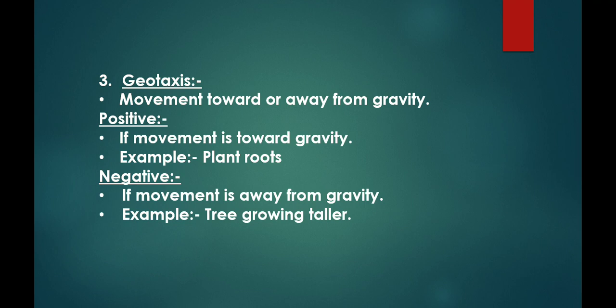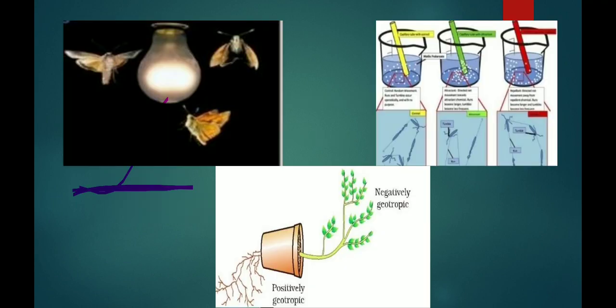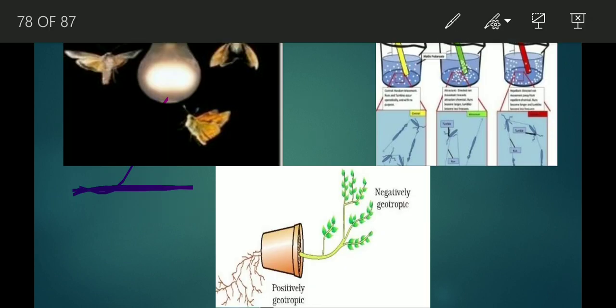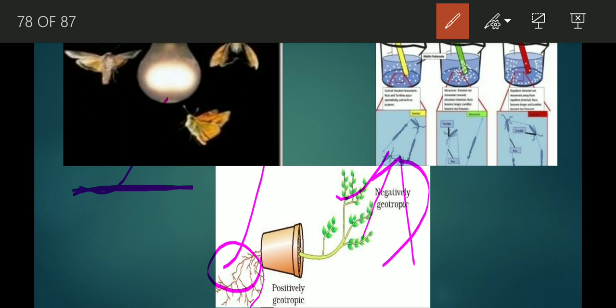Geotaxis is the movement towards and away from gravity. It is positive and negative. If the movement is towards gravity — for example, plant roots — that is positive geotaxis. If the movement is away from gravity — for example, a tree growing taller — that is negative geotaxis.